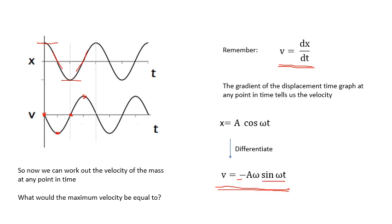So, now we can work out the velocity of the mass at any point in time. The maximum velocity. We're looking at this equation. Can you figure out the maximum velocity, v_max, would be when sine ωt equals 1. So, v_max would be minus Aω. That's useful if you want to work out the kinetic energy of the system to work out the maximum velocity, Aω.